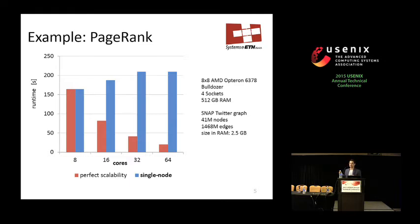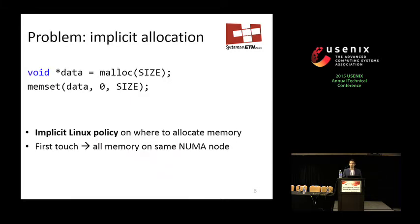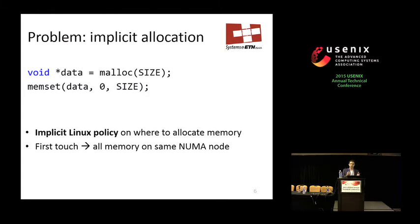You might wonder why anyone would allocate all memory on the same NUMA node — you'd be surprised how easy that is. Two common lines of code: you allocate memory with malloc and then use memset to initialize it. On Linux, memory isn't allocated when you call malloc; instead it's allocated when first touched, close to the thread touching it. If you run both together, all memory ends up allocated on just one NUMA node.